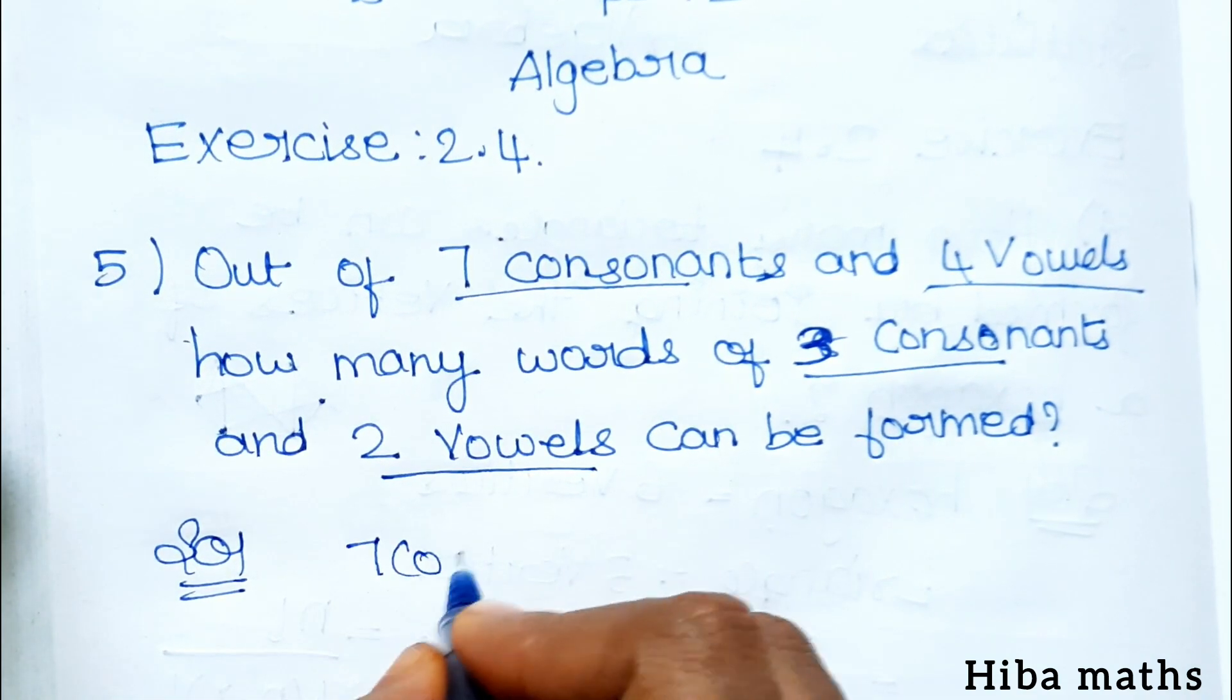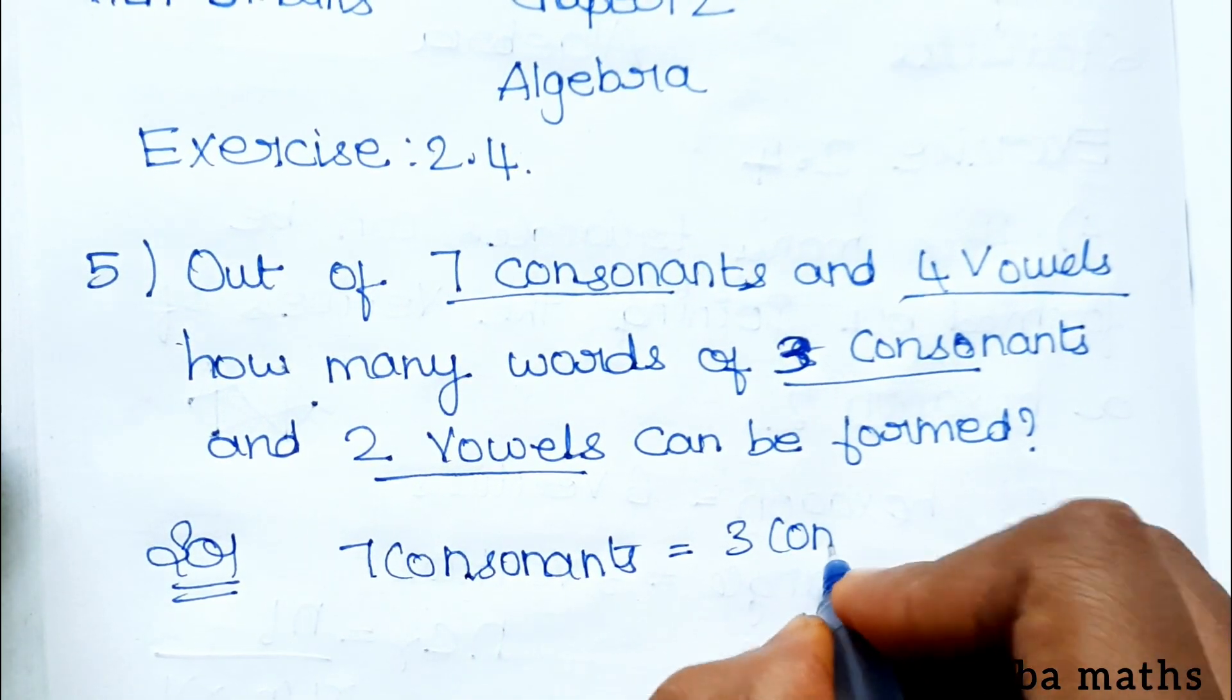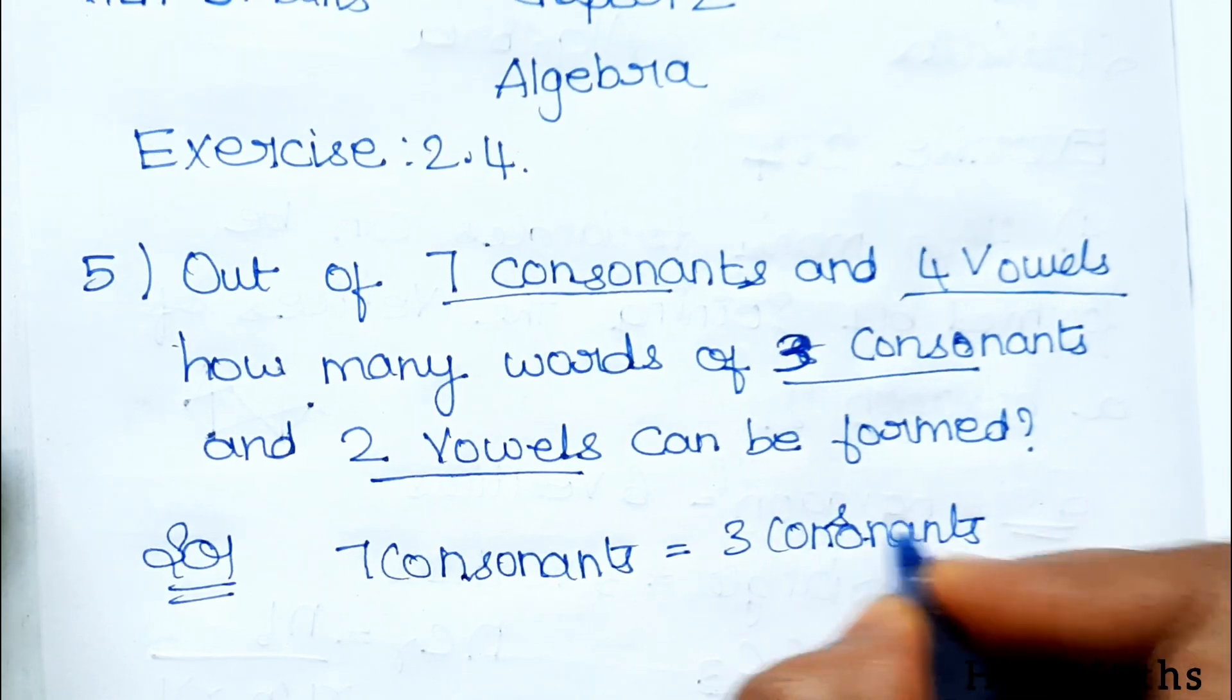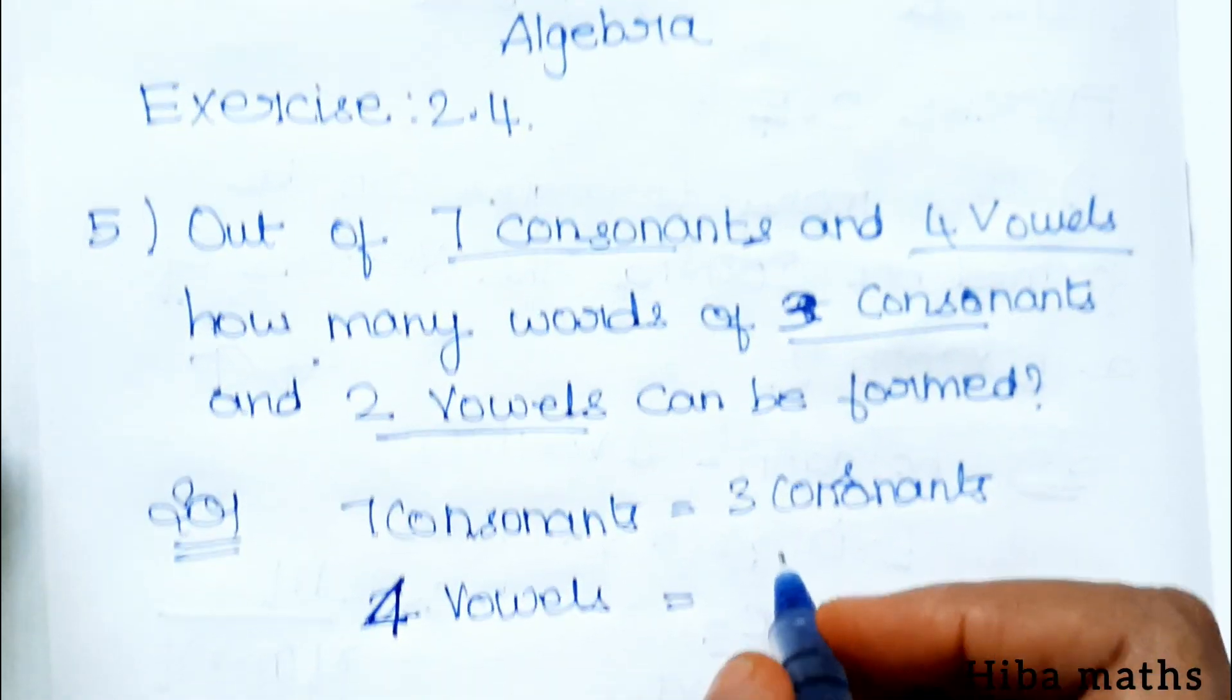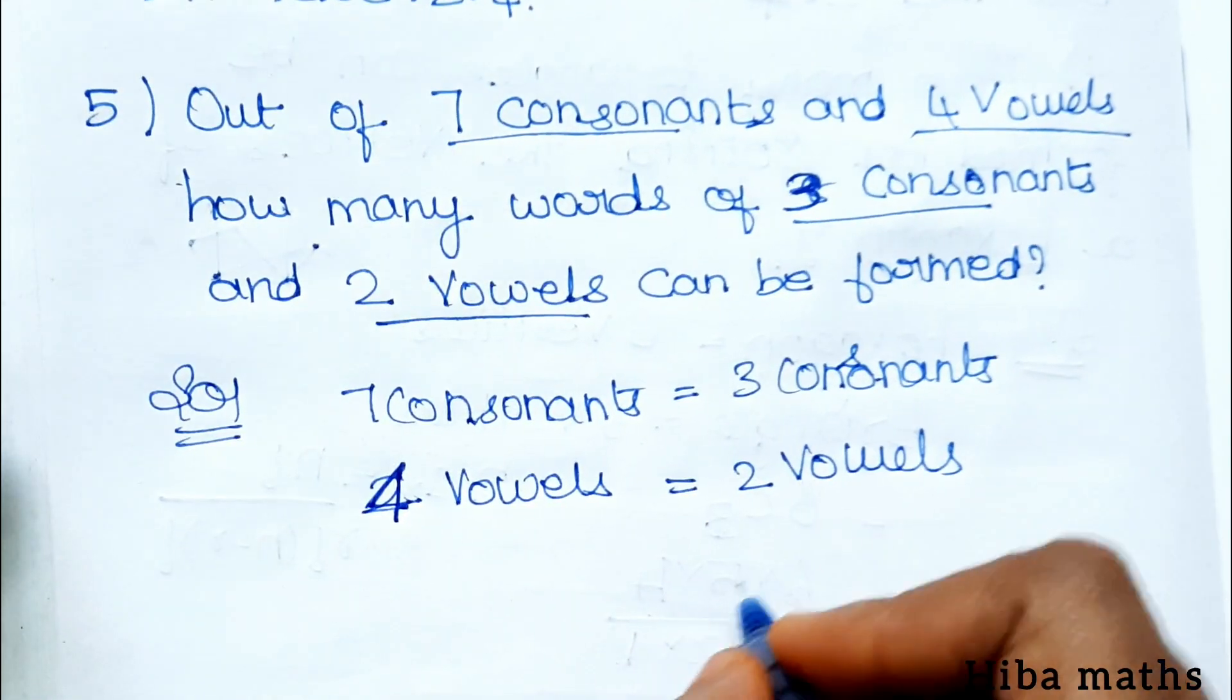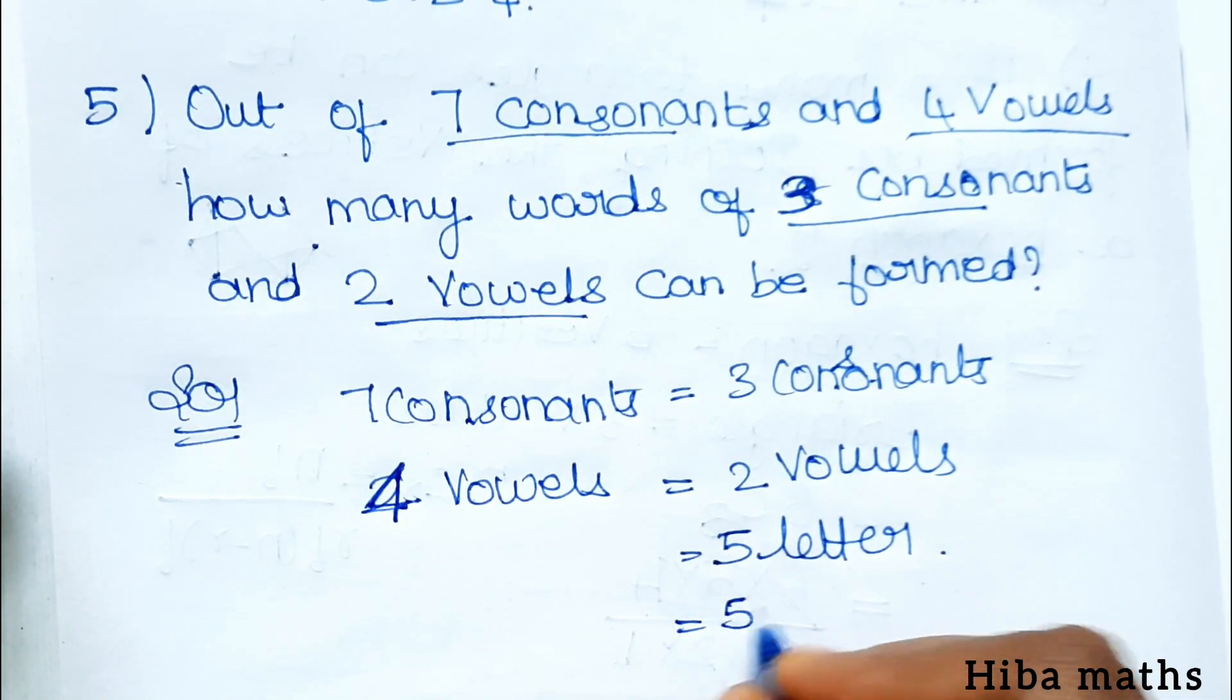In the solution, first one is 7 consonants, we select 3 consonants. Then there are 4 vowels, we select 2 vowels. Now total is 5 letters. Because we form a word with 5 letters, 5 factorial gives us how many words can be formed.